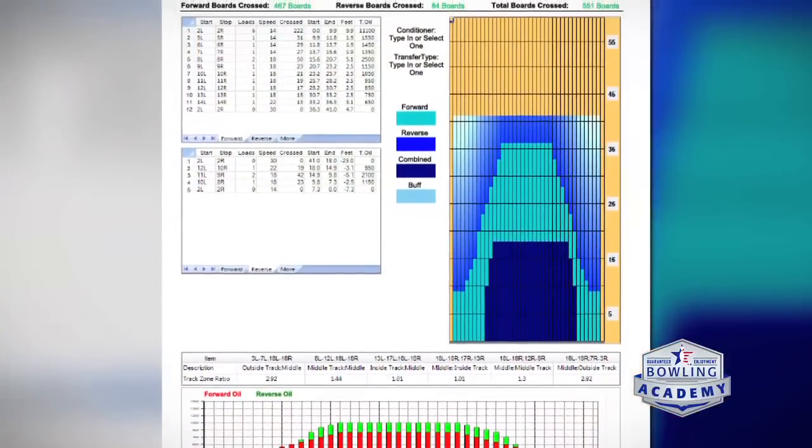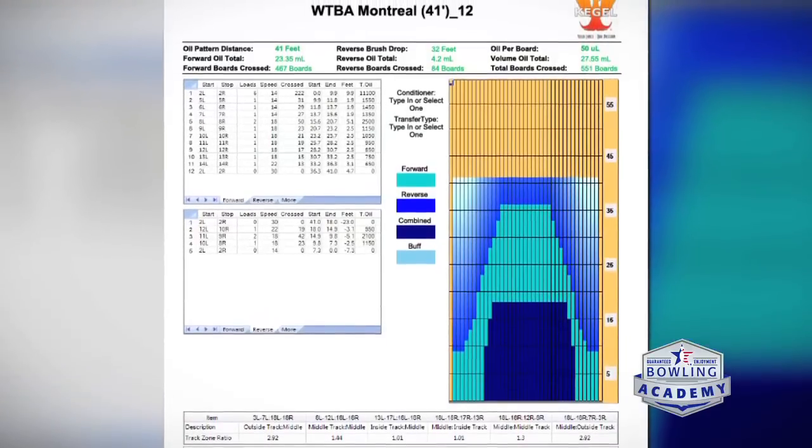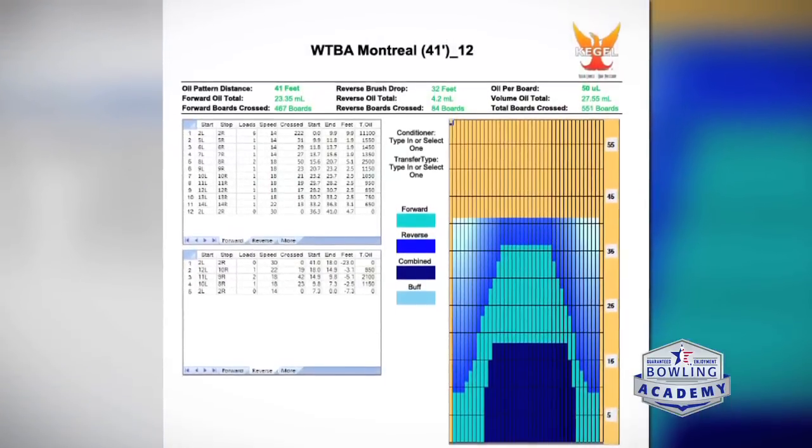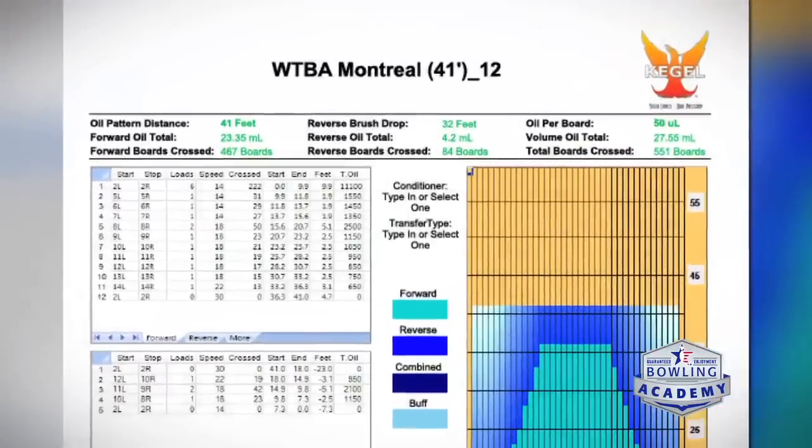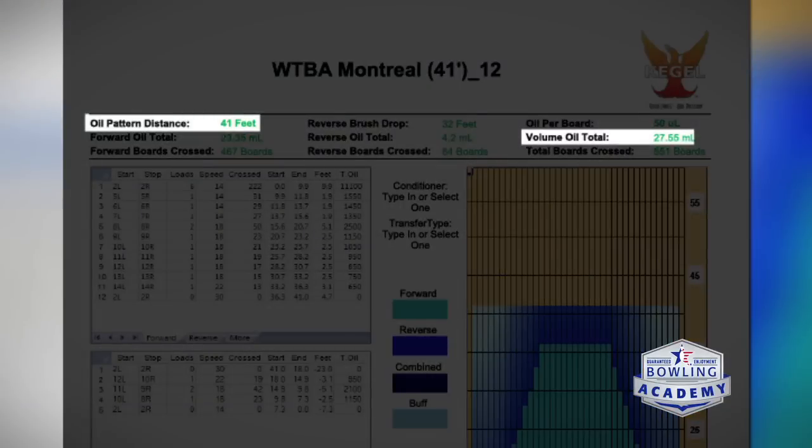Now, for instance, there's a second pattern. And the second pattern, in this case, the Montreal, we're looking at the same two things. So 41 feet and 25.7 mils. Almost identical amount of volume overall.